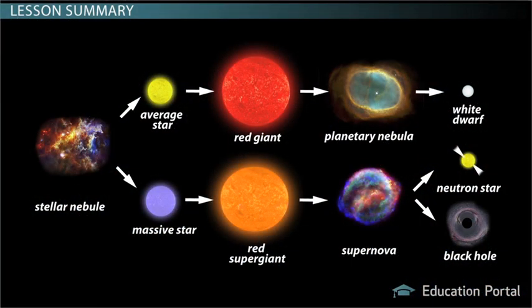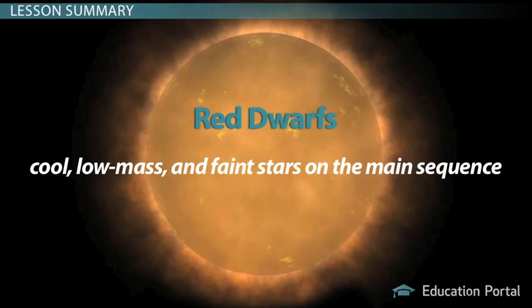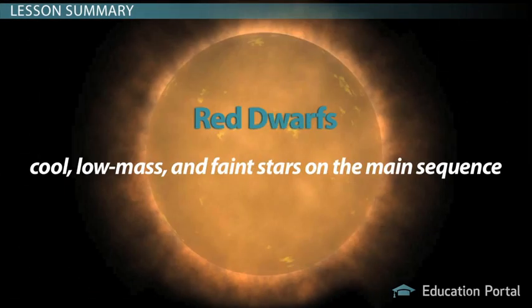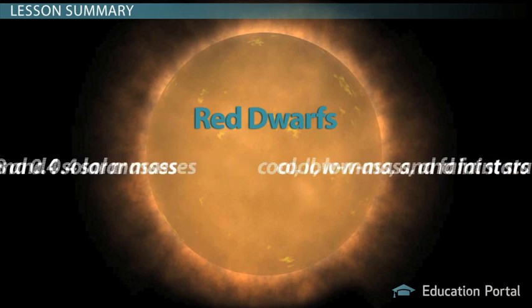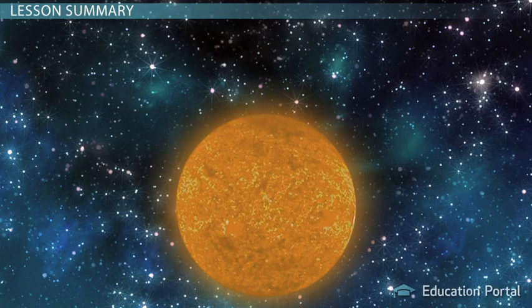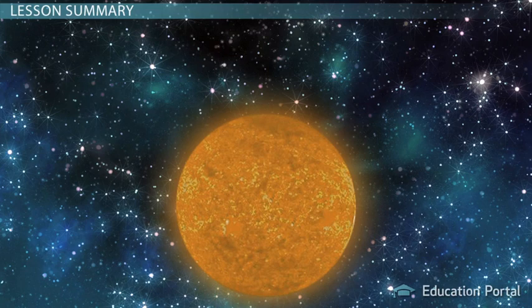Two different types of stars, two different ways to die, or not in the case of a red dwarf. Red dwarfs are cool, low mass, and faint stars in the main sequence. Red dwarfs have masses between 0.08 and 0.4 solar masses. These little guys are very efficient at burning their hydrogen fuel, giving them a very long lifespan compared to more massive stars.